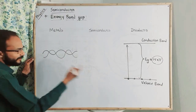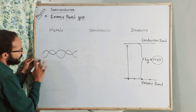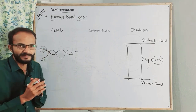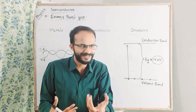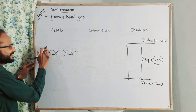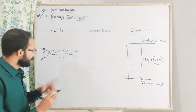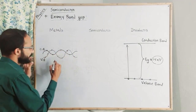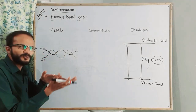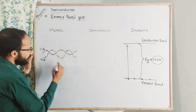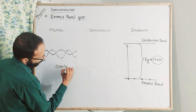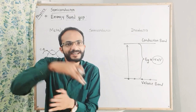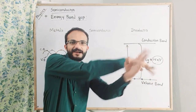This is my conduction band — CB. This is the balance band and conduction band. CB meaning is conduction band, and the other is the valence band — VB. For a metal, the valence band and conduction band are overlapping each other — there is no band gap.